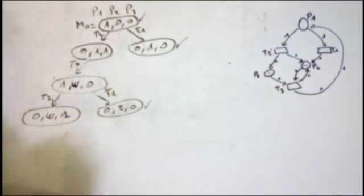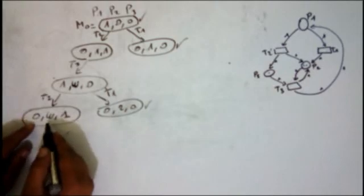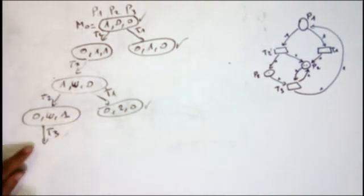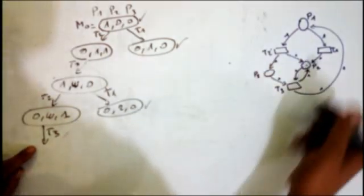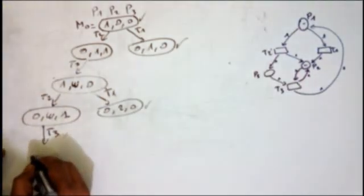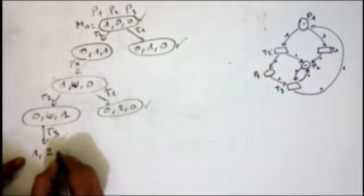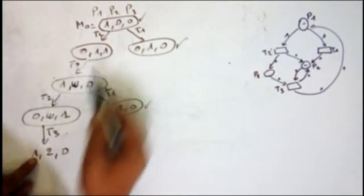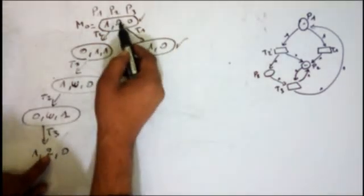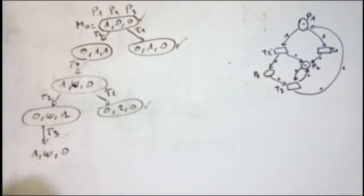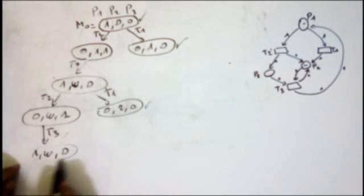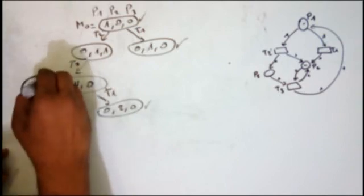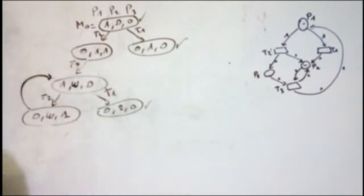From (0, W, 1) we can fire T3. I remove one from P2 and one from P3, and add one in P1 and one in P2, getting (1, W, 0). We notice this is greater than or equal to a previous marking — since W is strictly greater than 0 — so we replace it by W. This means from (1, W, 0), when I fire T3, I just loop back to (1, W, 0).